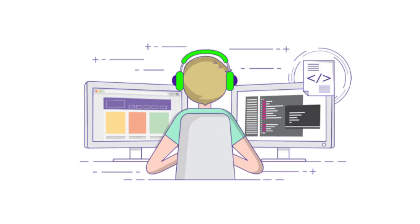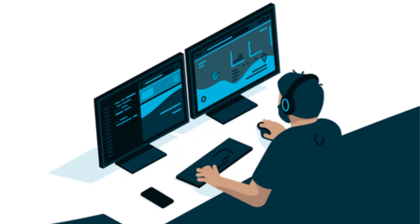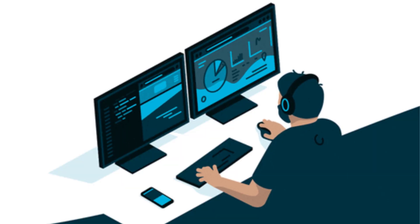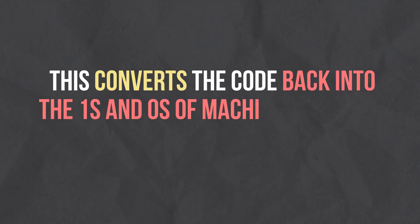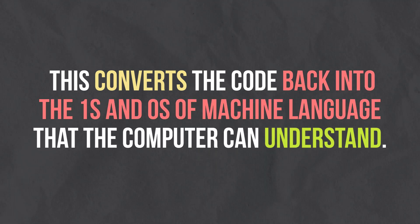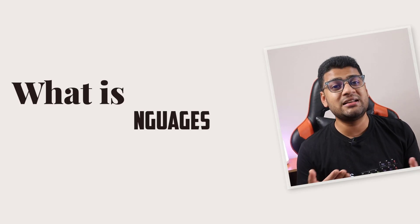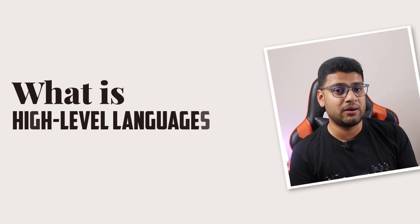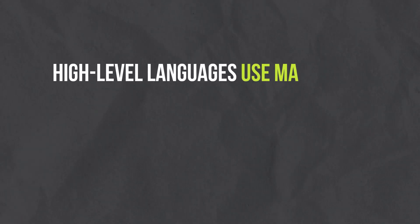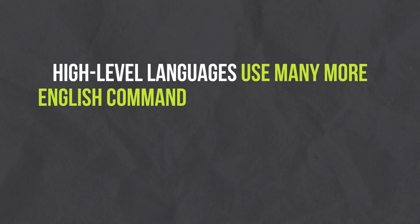What is assembly language? Assembly language is slightly easier to understand. The bits of machine language are replaced by numbers and English commands. Before assembly code is run by a computer, it is processed by an assembler, which converts the code back into the ones and zeros of machine language that the computer can understand.